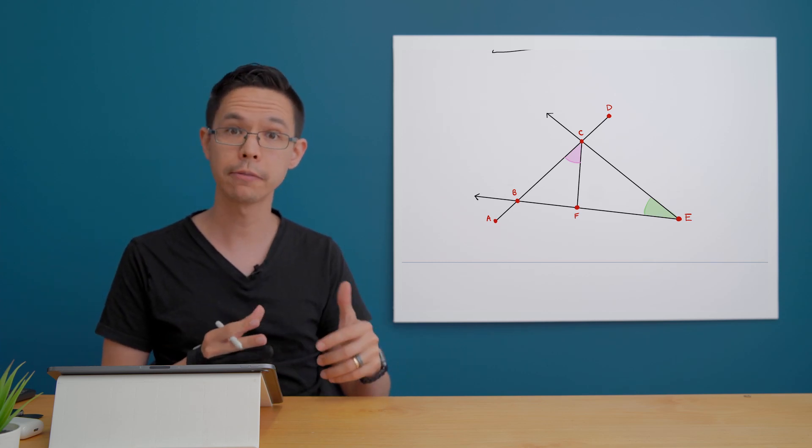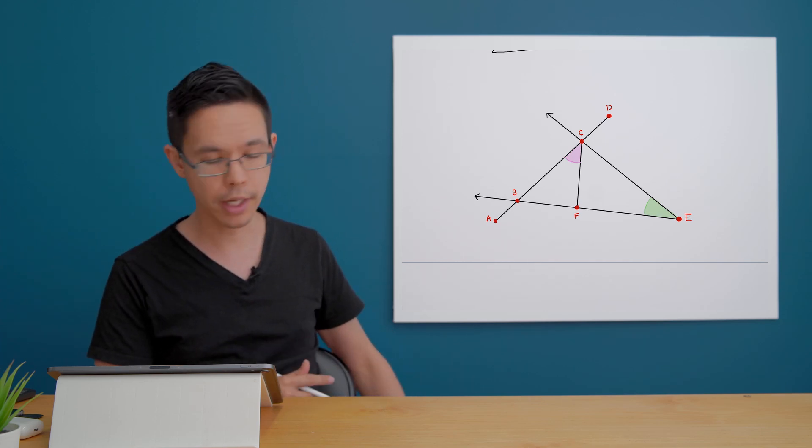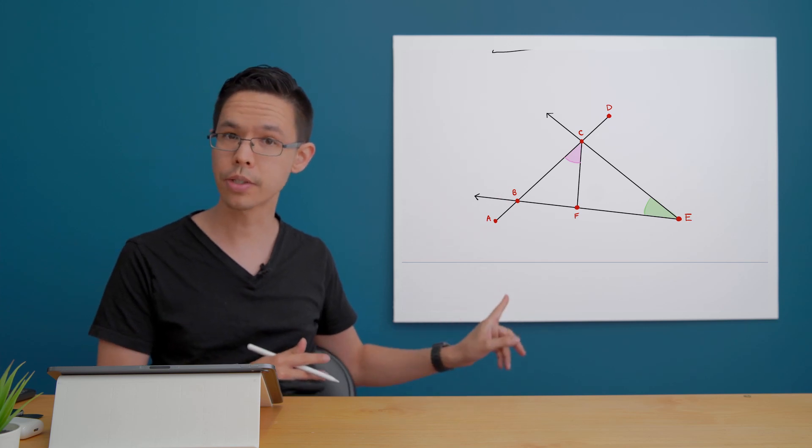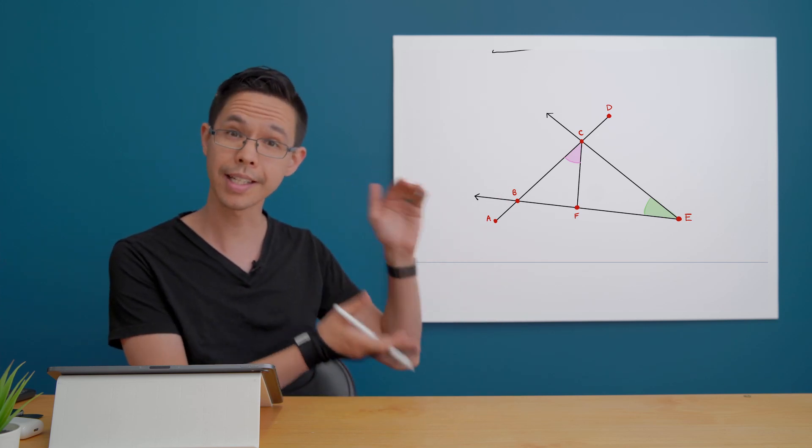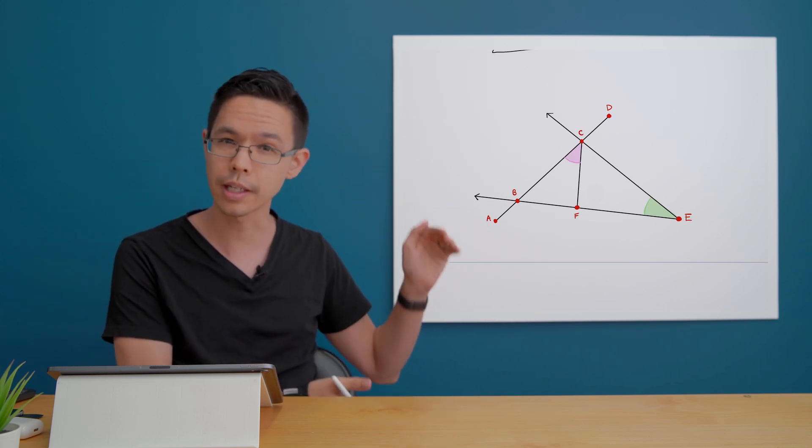So we don't have lines on this picture, but we definitely have segments. So you can see right through the middle, C and F. That's a segment, a line segment, because it has defined start and end points. It doesn't extend forever.